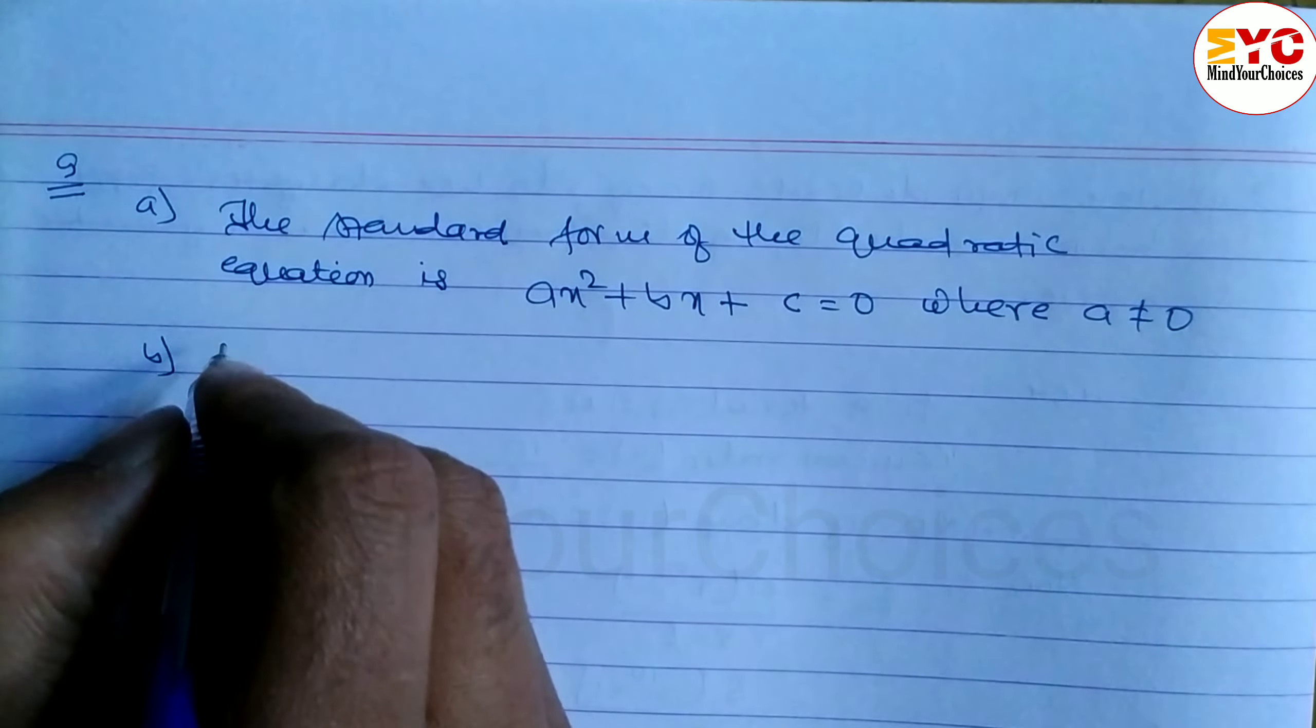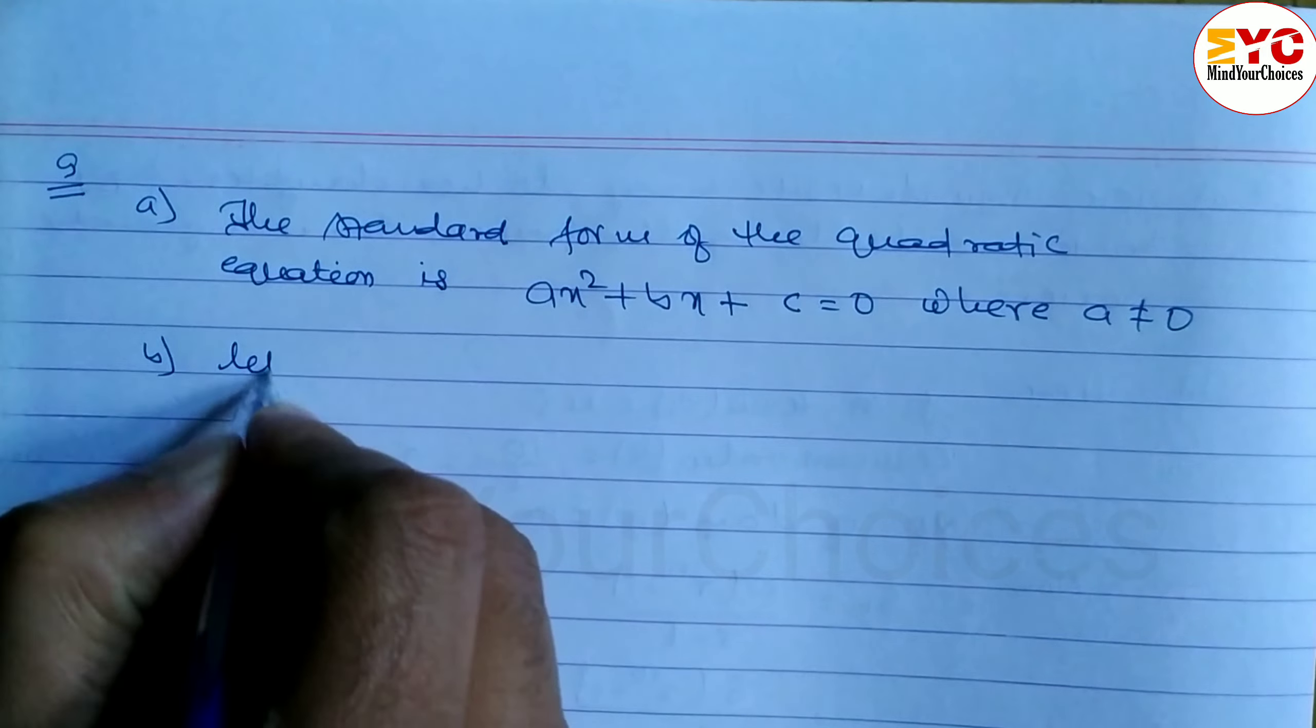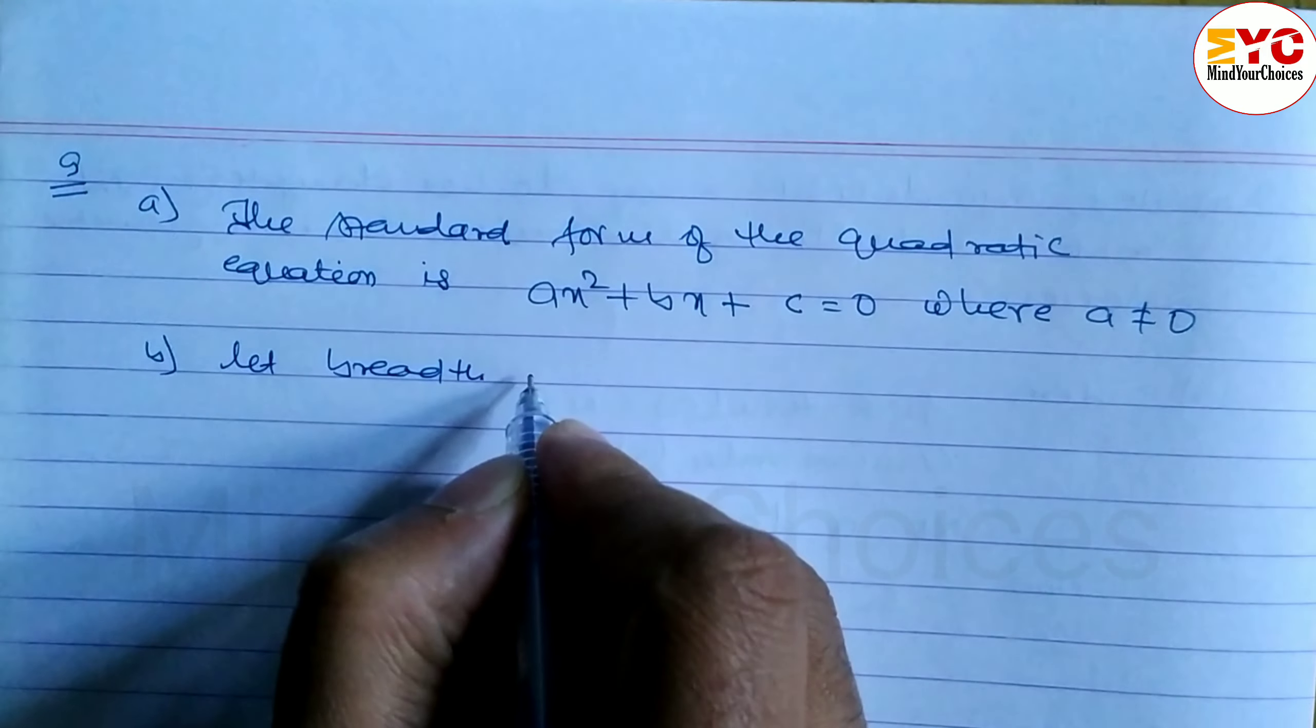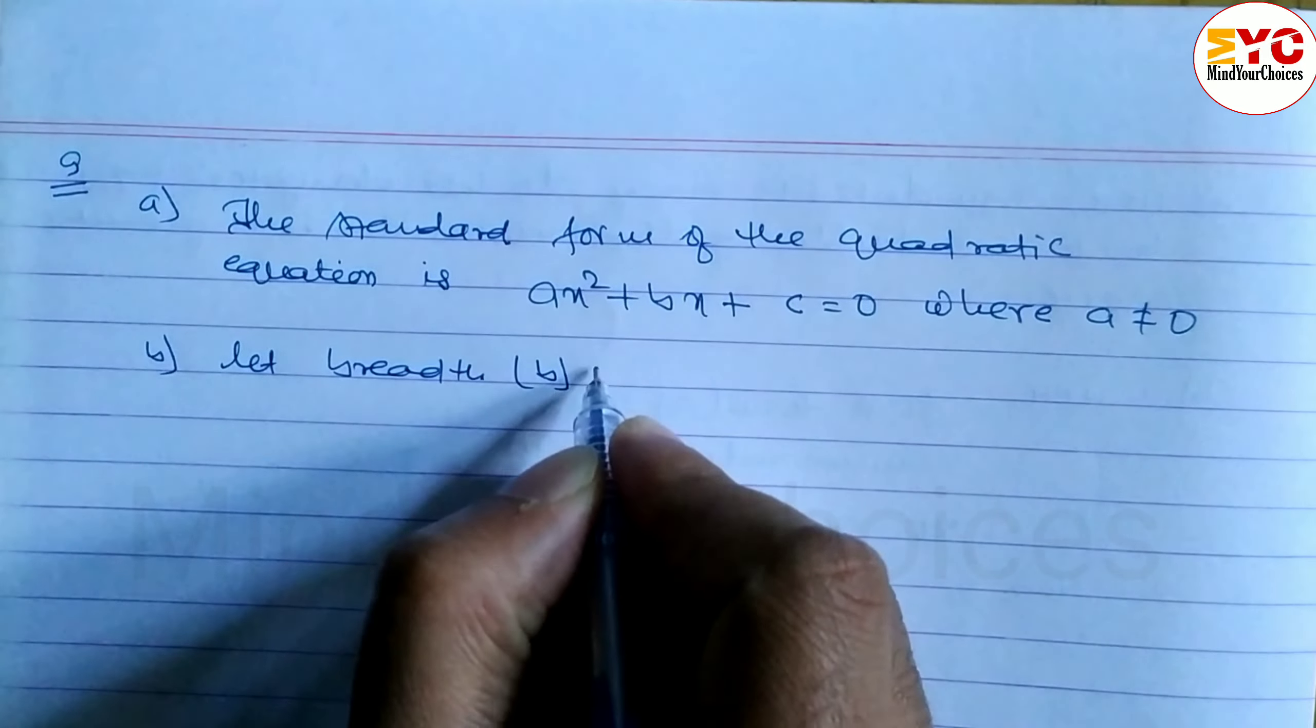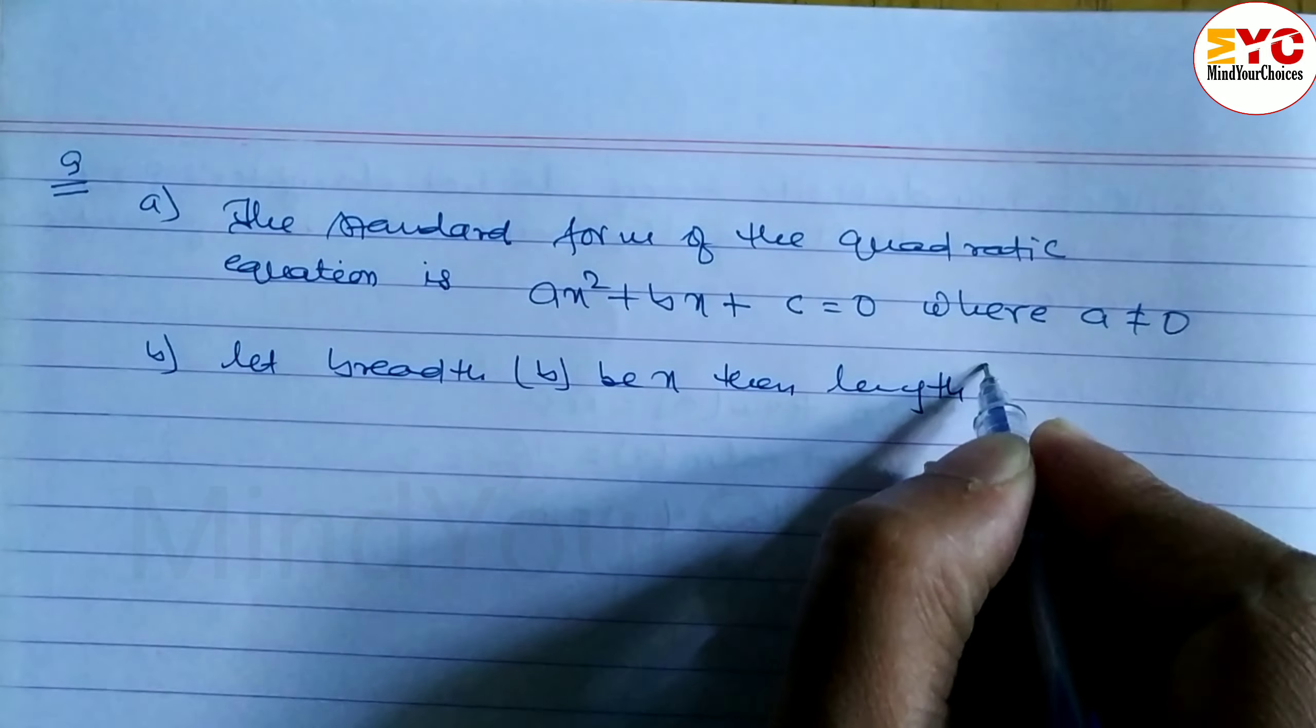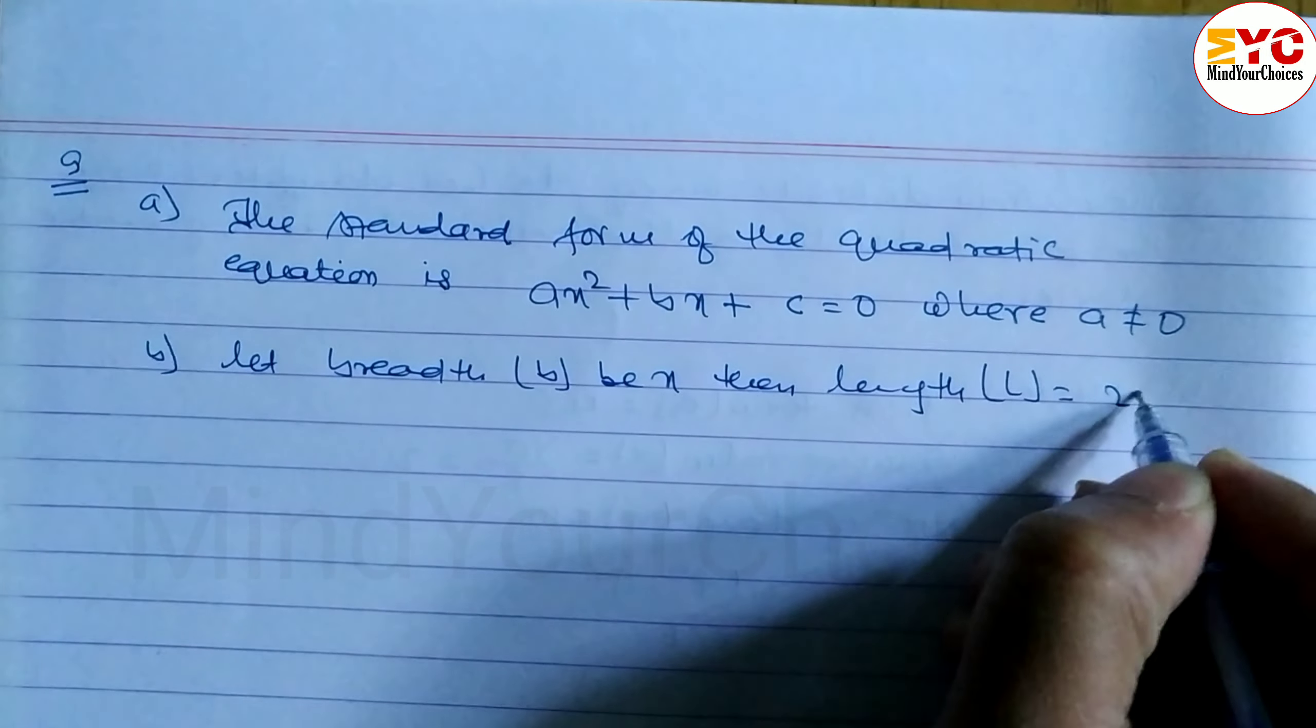So then for breadth, we have to write here: Let breadth of rectangle B be x. Then length L of rectangle is equal to 2x.